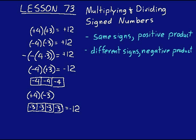Remember these rules for multiplying and dividing signed numbers. When you have same signs, you get a positive product. When you have different signs, you get a negative product. That applies when you're multiplying pairs of factors together — just for multiplying pairs of factors. If they both have the same sign, your product is positive. If they have different signs, your product is negative.